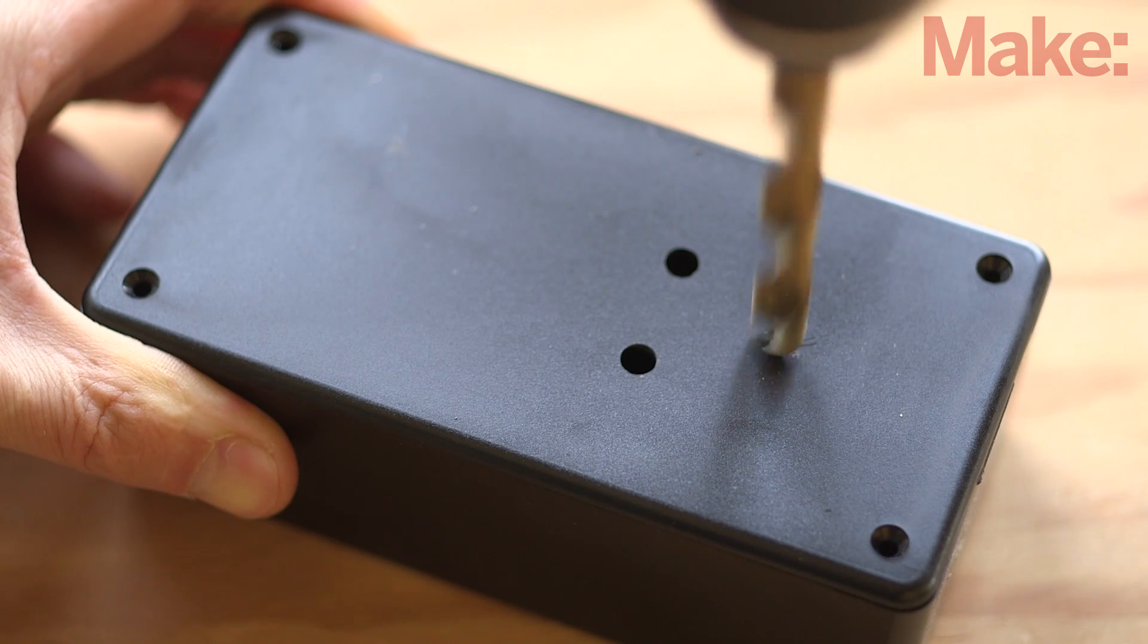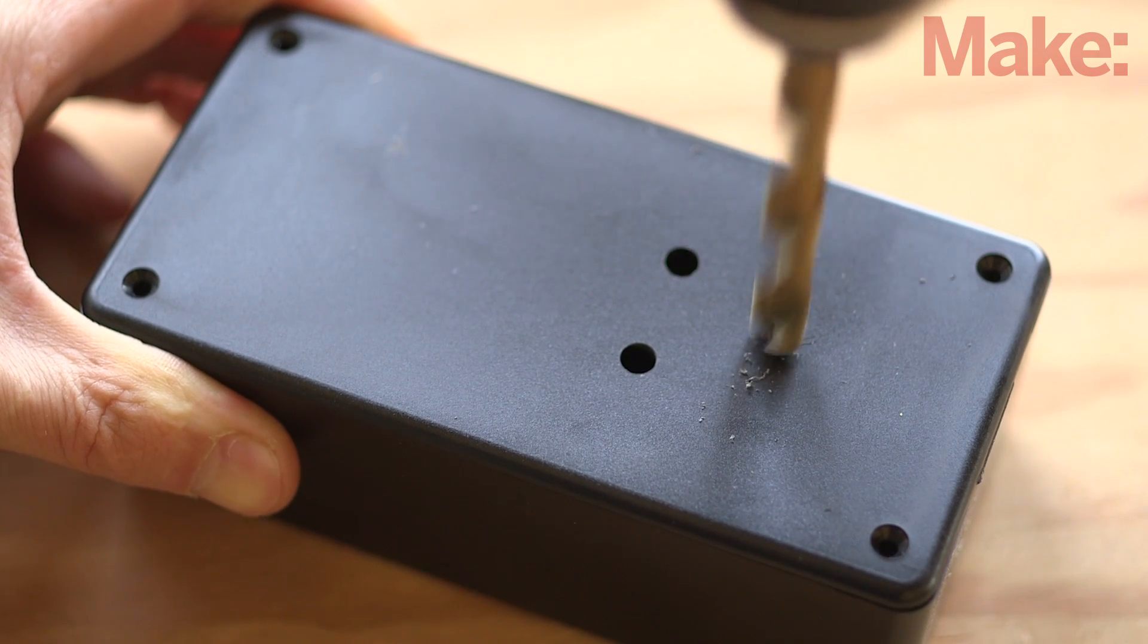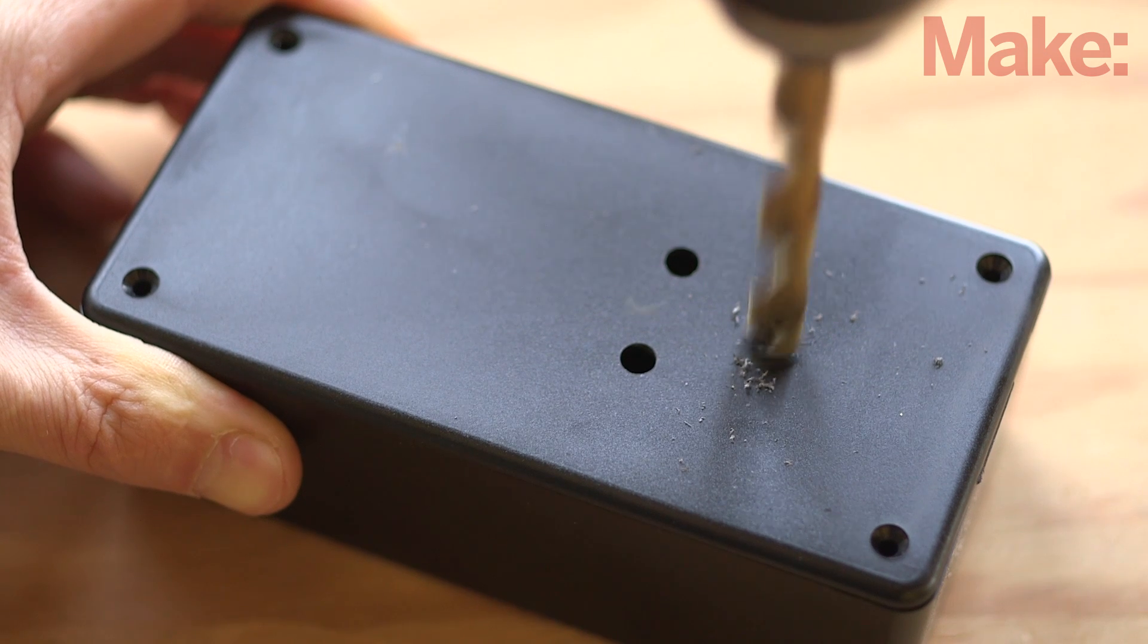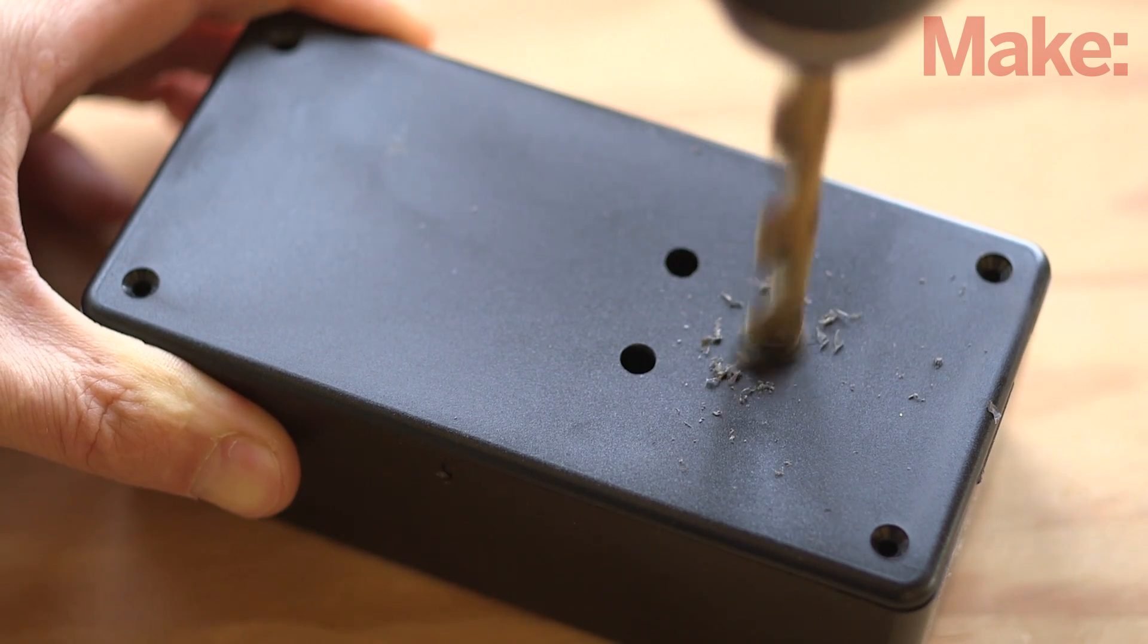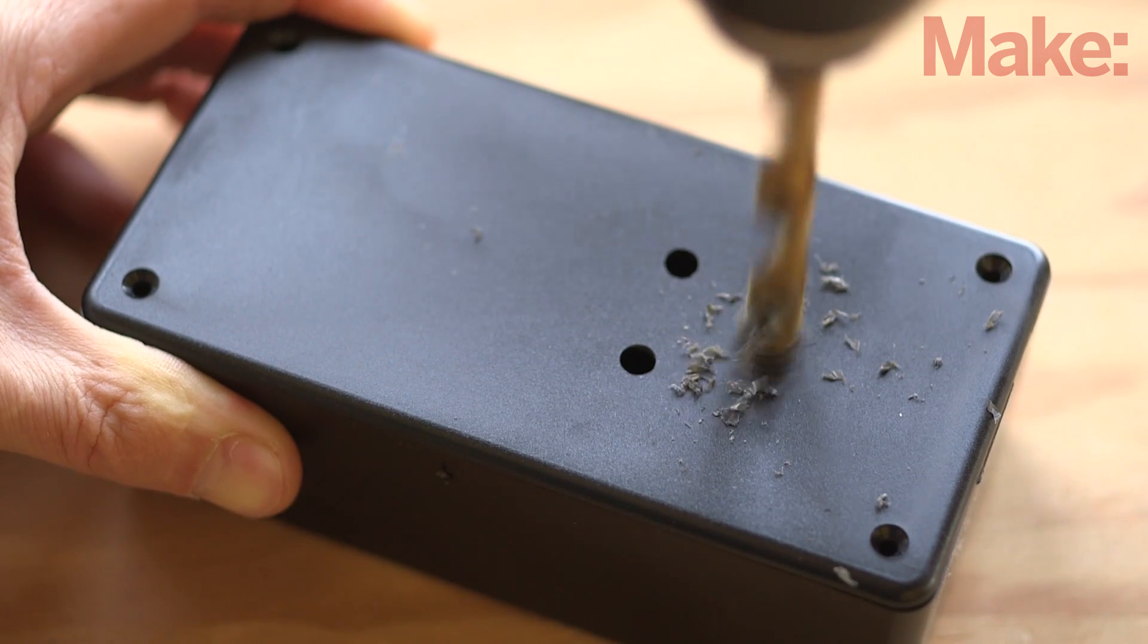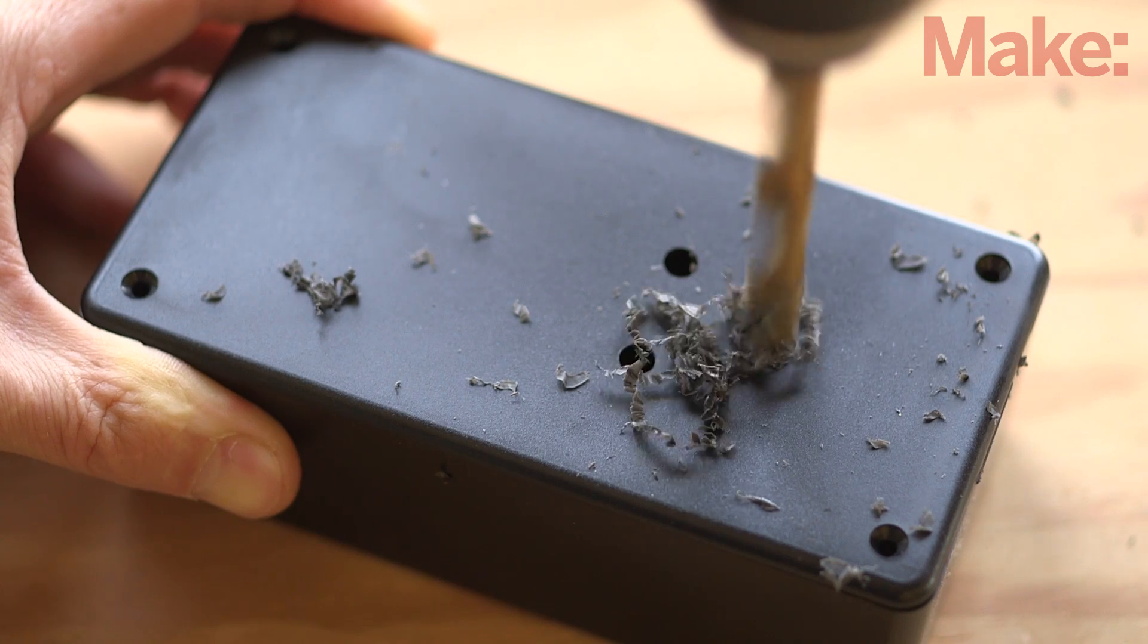Now all you need to do is prepare the enclosure for all the components. Start by drilling two holes for the LEDs. Next, drill a hole where you want the switch located, followed by another hole for the potentiometer.